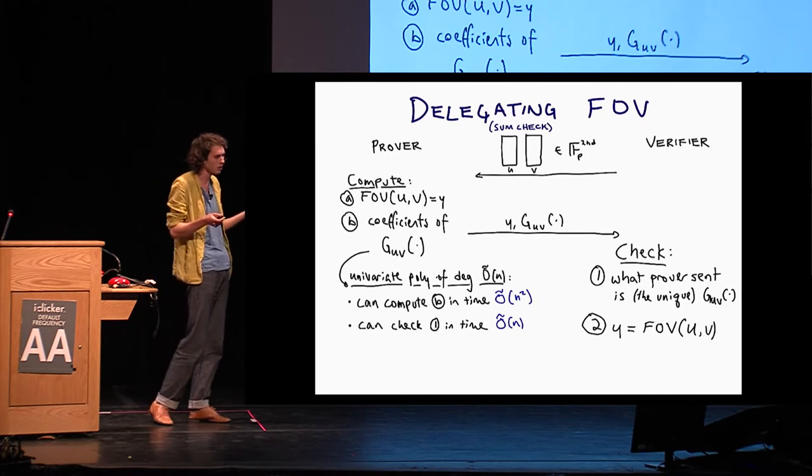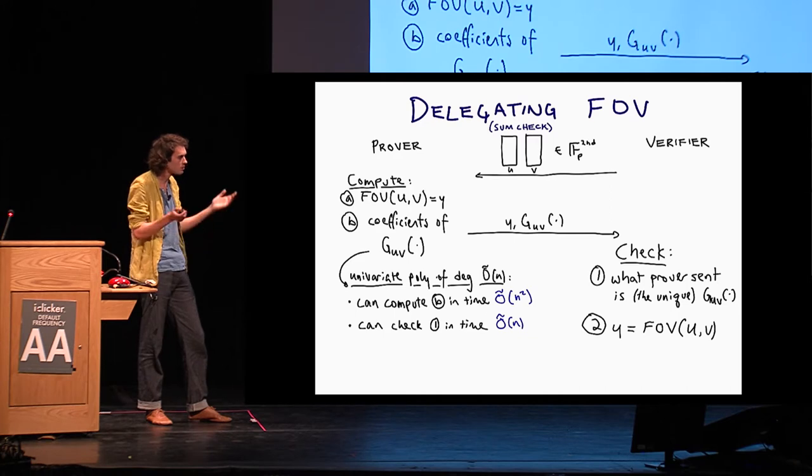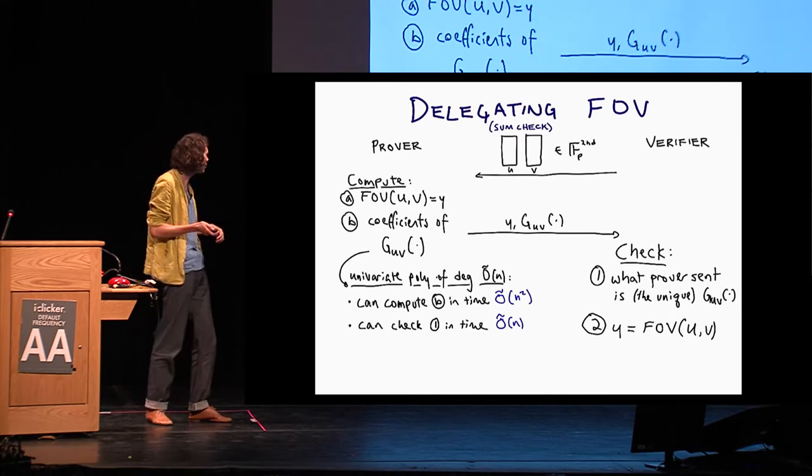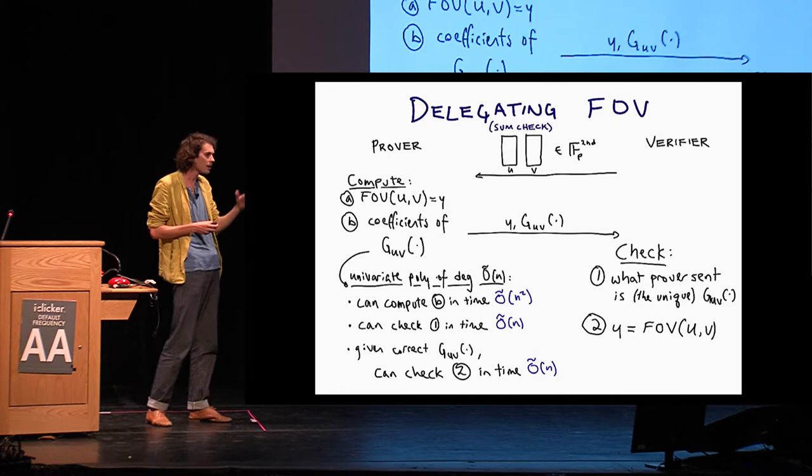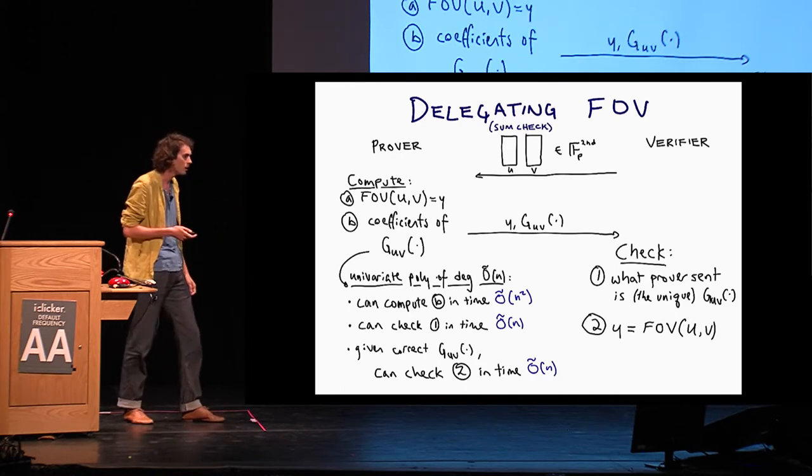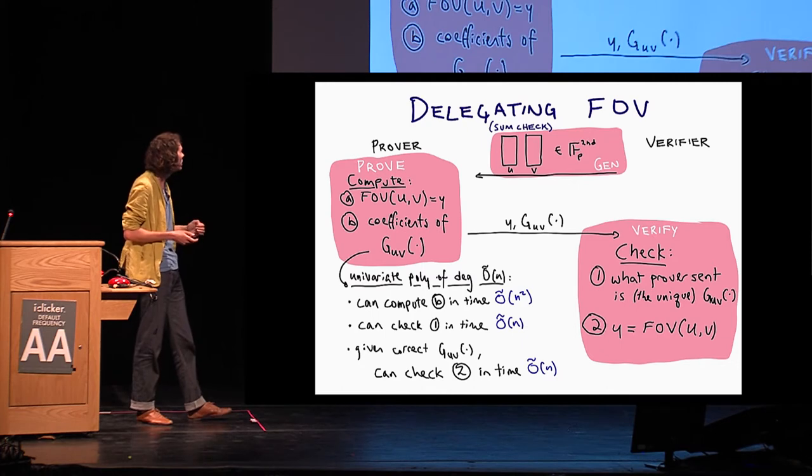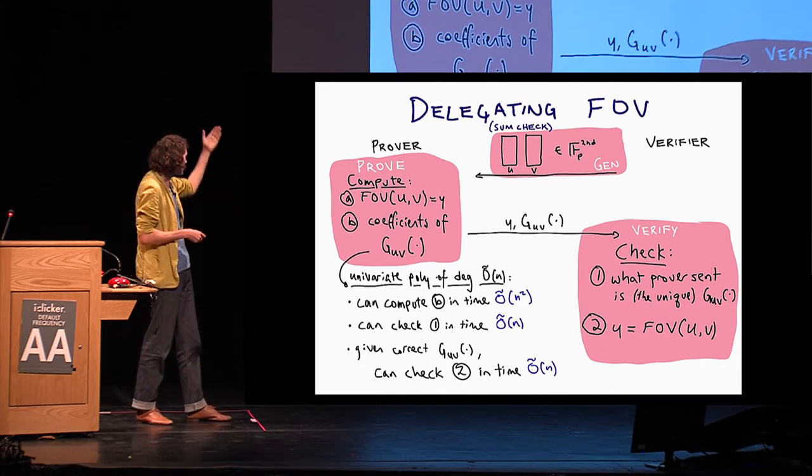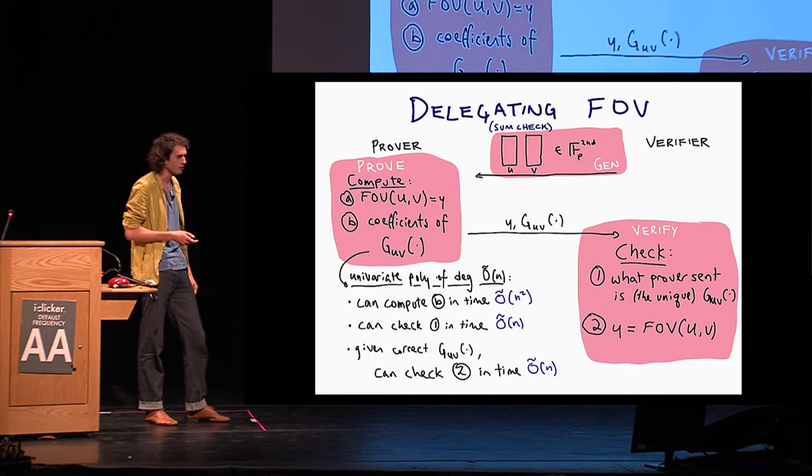So it's this univariate polynomial of just linear degree, which, first of all, can be computed, the coefficients of which can be computed in essentially quadratic time from U and V. And it enables the verifier to check that, he can check that it's correct, the correct GUV in linear time via essentially the Schwartz-Zippel lemma. And finally, given this univariate polynomial, he can check property two very quickly in just linear time. So this is starting to look like a proof-of-work scheme. Here are algorithms generators, just pick random field elements, prove is this two-step computation, and verify is this two-step verification procedure.